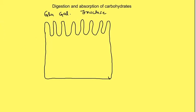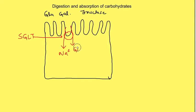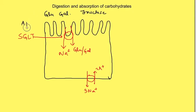Glucose and galactose are absorbed by secondary active transport via a transporter known as SGLT - the sodium-glucose transporter. Sodium moves inside along its concentration gradient, carrying either a molecule of glucose or galactose with it. This sodium gradient from outside to inside is maintained by the sodium-potassium ATPase, which continuously pumps 3 sodium ions out of the cell and brings 2 potassium ions in. So at the apical membrane we have the sodium-glucose transporter.